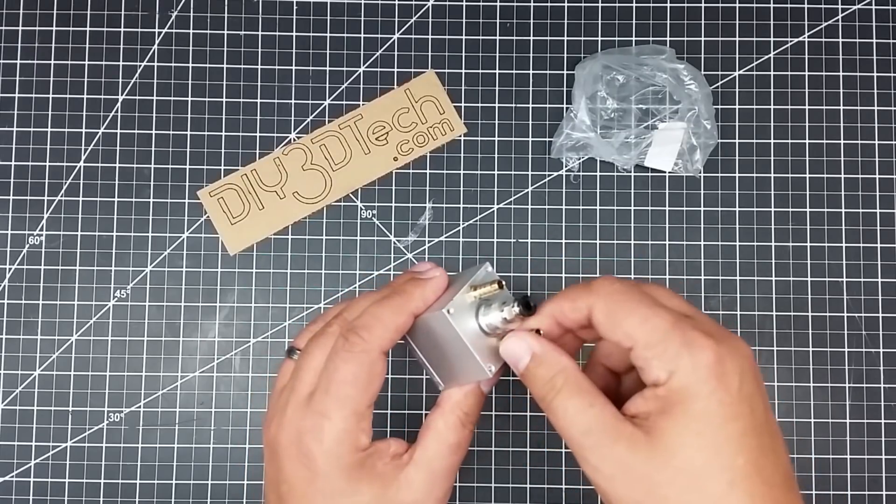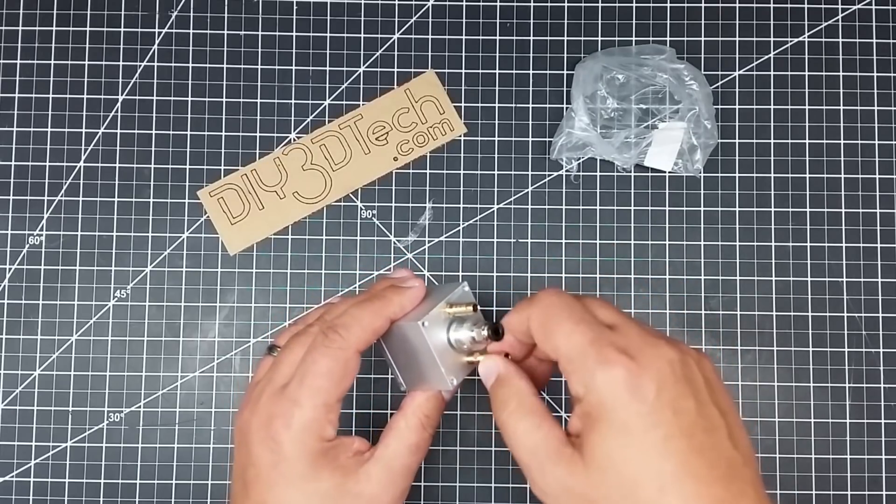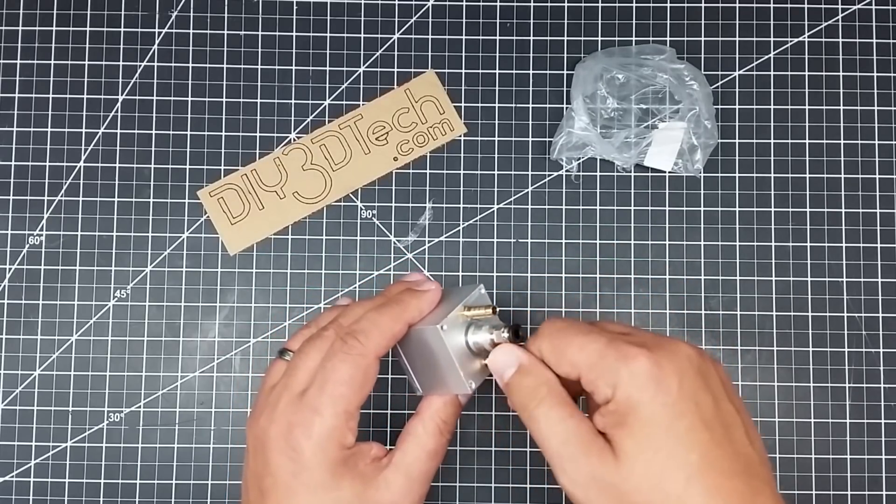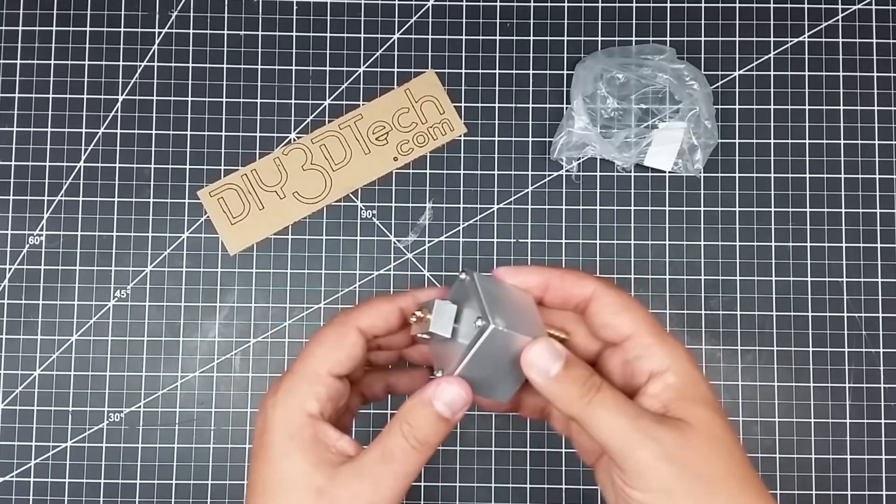Now it's got an inlet and an outlet. And these are not very well sealed. I would probably use some kind of thread sealer on these to make this all watertight. And it does look like it's got some kind of seal.